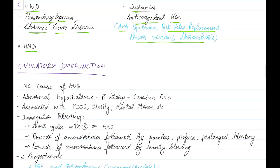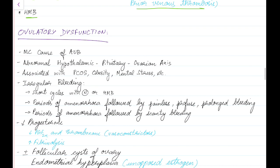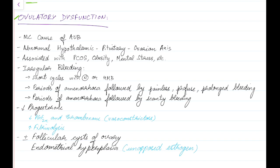Coming to the next non-structural abnormality — ovulatory dysfunction. It is the most common cause of abnormal uterine bleeding, due to an abnormality in the hypothalamic-pituitary-ovarian axis. Ovulatory dysfunction is associated with polycystic ovary syndrome, obesity, mental stress, etc.